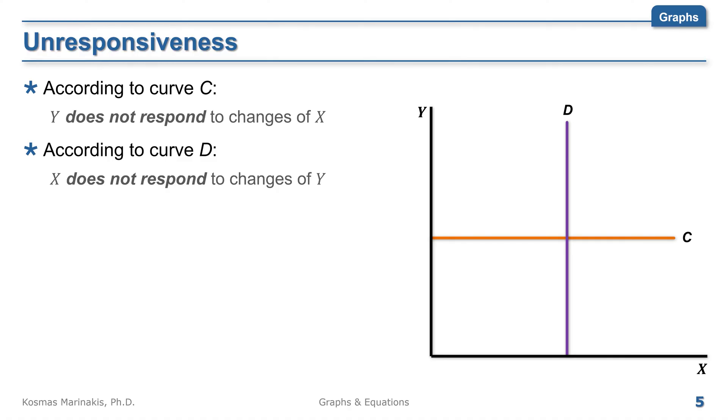Also, a vertical curve like D in turn illustrates that changes in the value of y do not affect x. Along both lines, the two variables do not respond to each other. So both of those lines represent the relationship that x and y have no relationship.